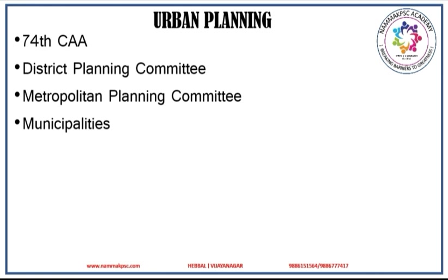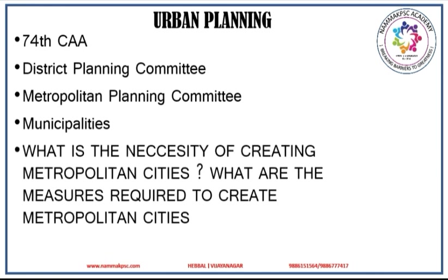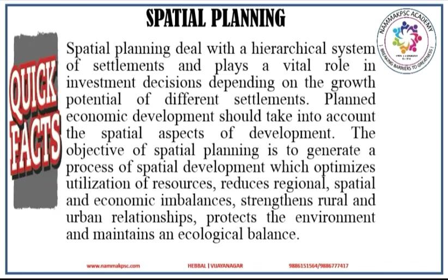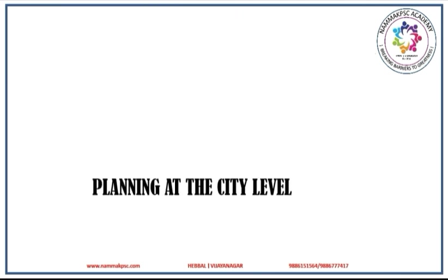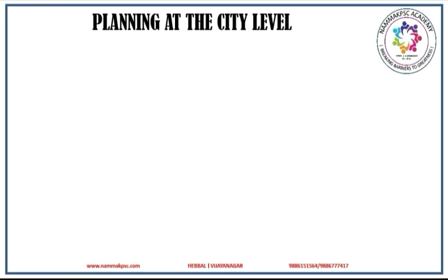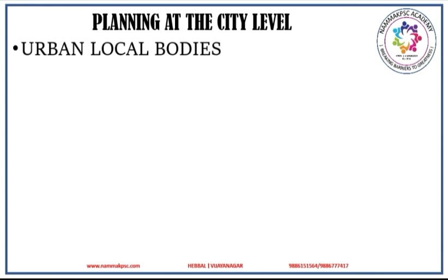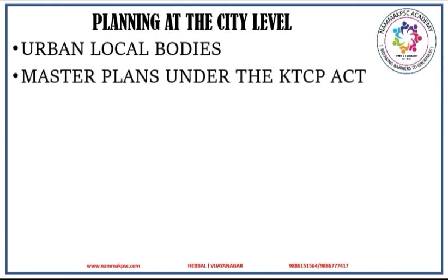The 74th Amendment also provides for municipalities which are responsible for urban planning including town planning and for the preparation of plans for economic development and social justice. Now let us look at planning at the city level. Under the constitution, urban planning, town planning, social and economic development and protection of environment are to be performed by urban local bodies which prepare master plans for their respective cities. In Karnataka, at present, master plans under the KTCP Act are prepared by local planning authorities or UDAs. It is proposed to prepare only one plan at the city level which includes the spatial plan, development plan and development control measures by the municipality. In this regard, capacity building of ULBs is essential to take up planning responsibilities.